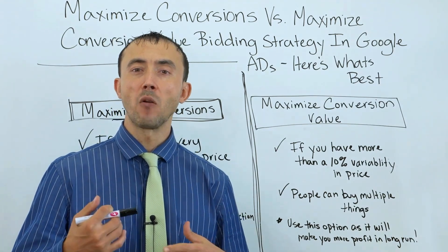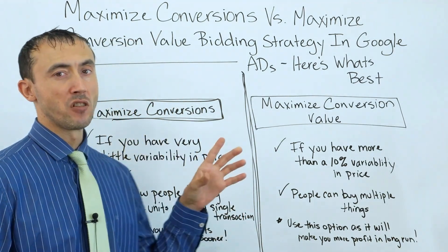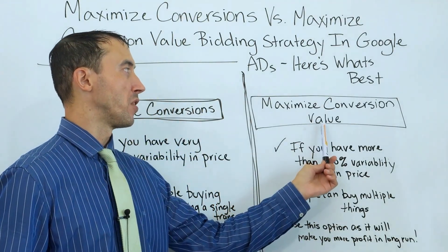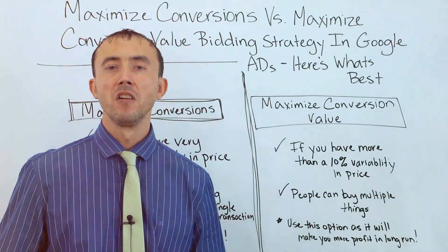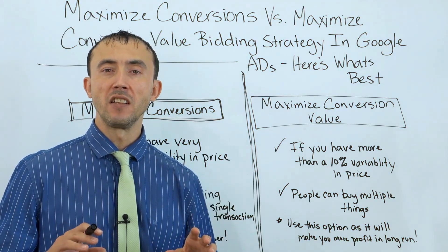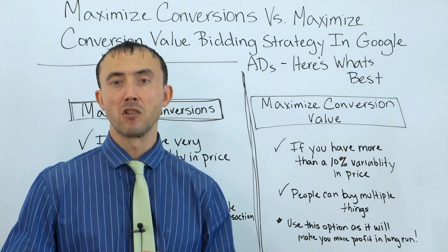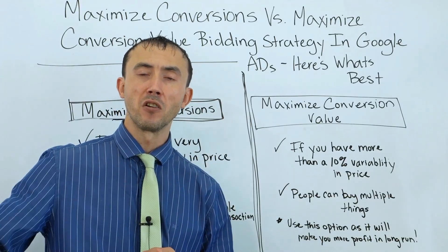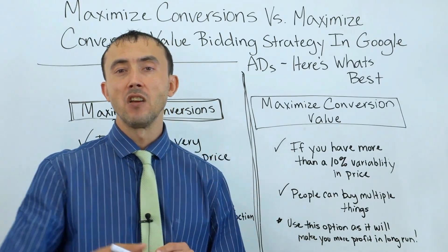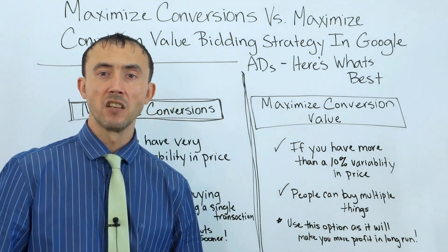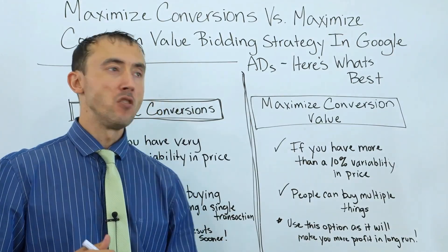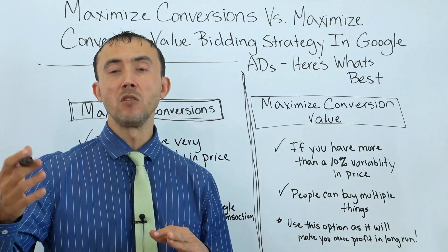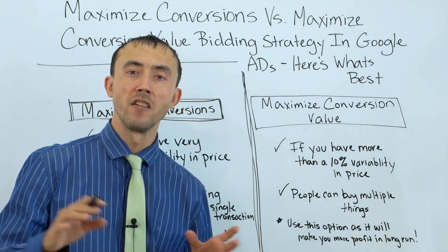However, if for some reason you just couldn't track whether a lead was qualified or not, then maximize conversions is going to be better because there is no actual value tied to the conversions that the machine learning algorithm can utilize with maximize conversion value bidding strategy. But even if you are generating leads, you can at least score the leads if you don't know a sale is going to occur within the next 90 days — which is the window of time Google gives you to upload whether a sale occurred. You could score the lead between one and ten, use that as your conversion value, and use maximize conversion value bidding strategy to optimize for the best lead quality.